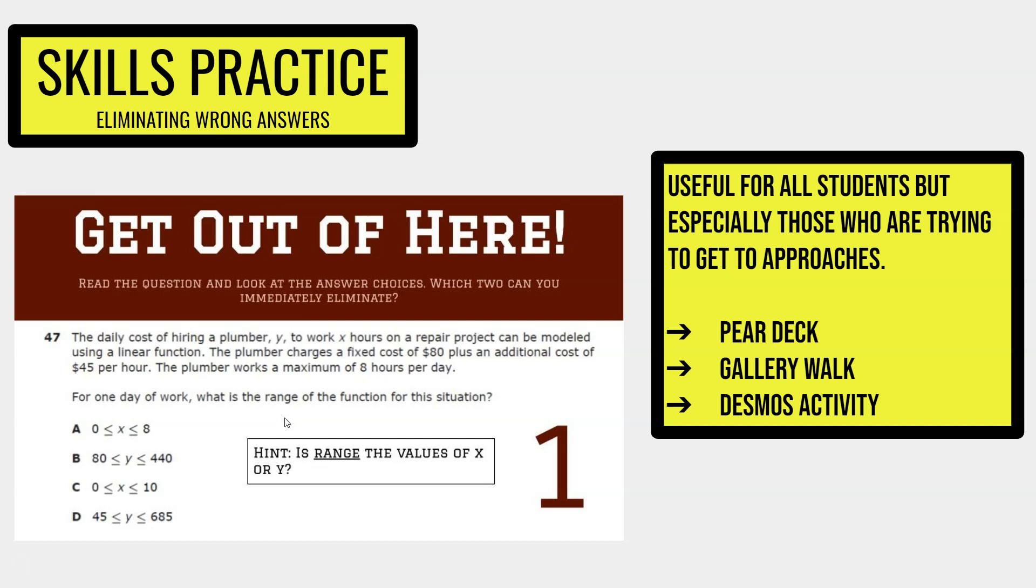There are three different ways that you can give this activity, either as a Pear Deck, a Gallery Walk, or a Desmos activity. While I'm talking about Desmos activities, I want to also let you know that the Spiraling Reviews, the But I Regress, and the Can You Solve for Y activities are all in Desmos activities format as well that can be self-checking for the students.